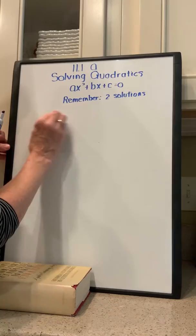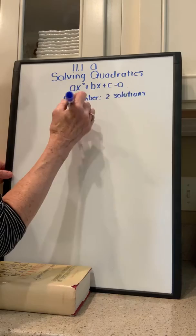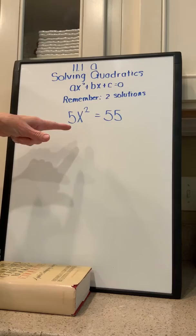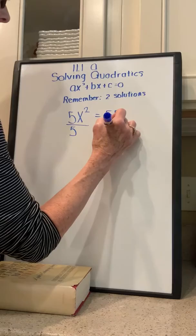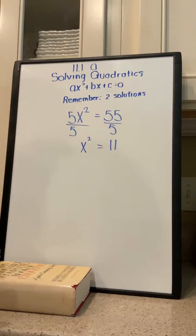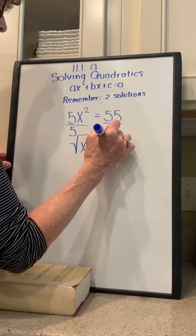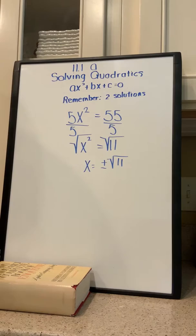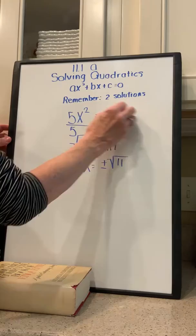The next problem: we have 5x squared is equal to 55. We still want to solve for x, so we want to get x squared by itself — we're going to divide both sides by 5. We have x squared is equal to 11. Now using the square root property, the square root undoes the square. We're going to take the square root of both sides, and you have to consider both the positive and the negative root. So x is equal to plus or minus the square root of 11.